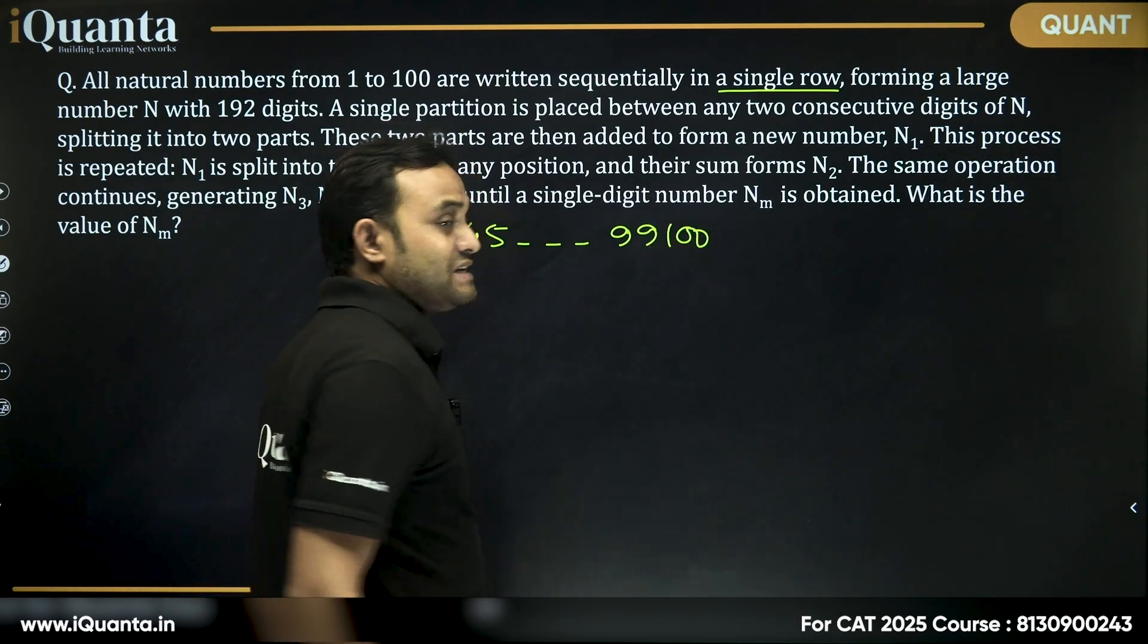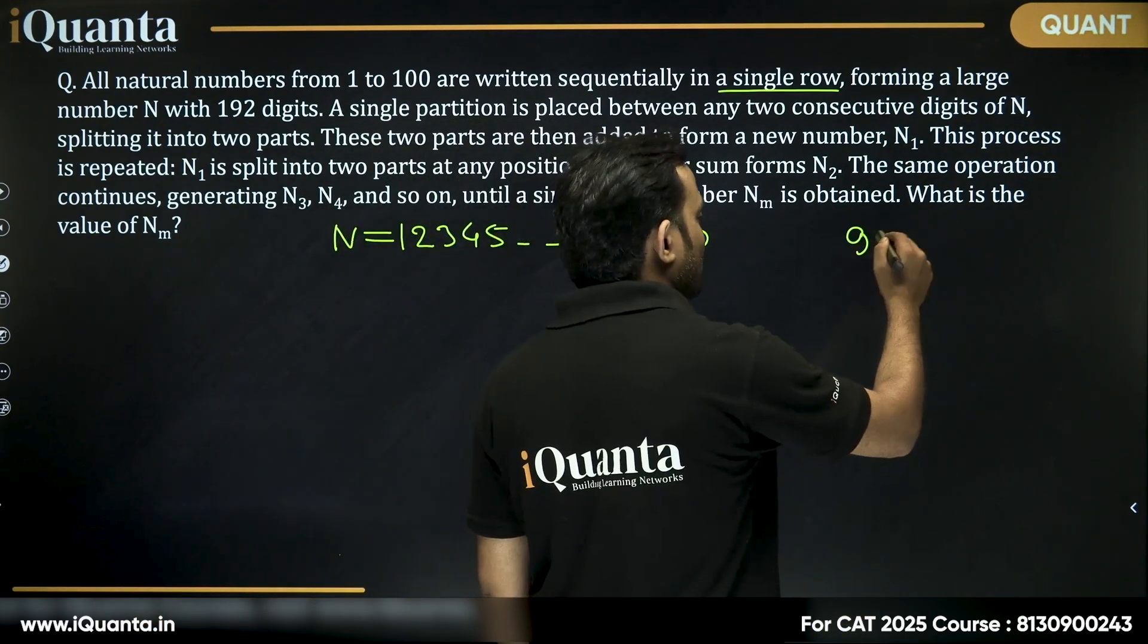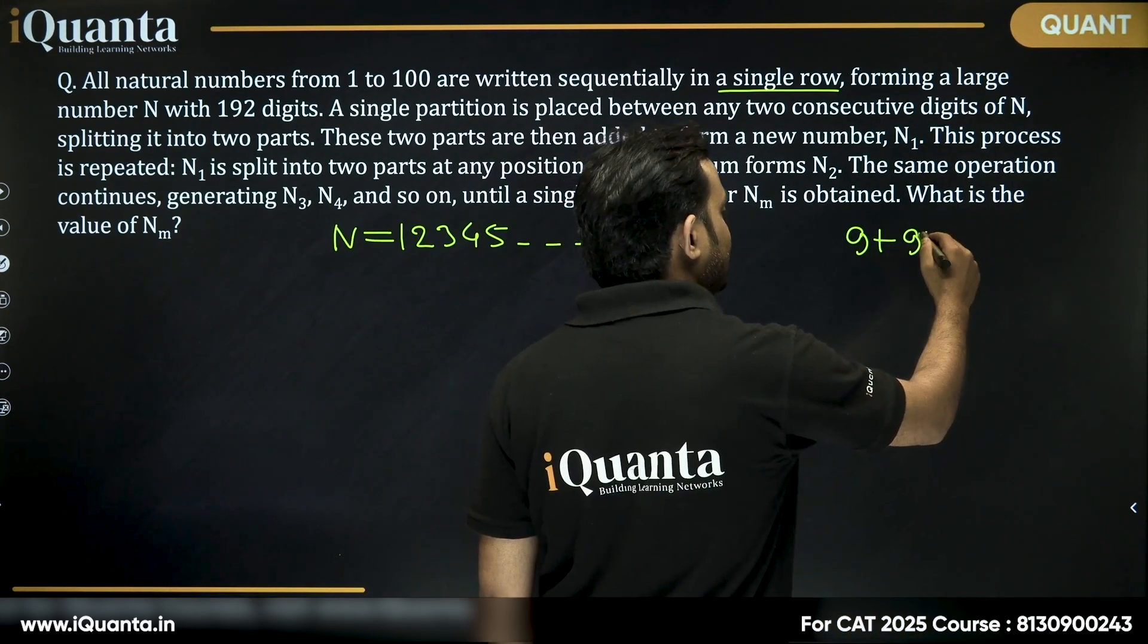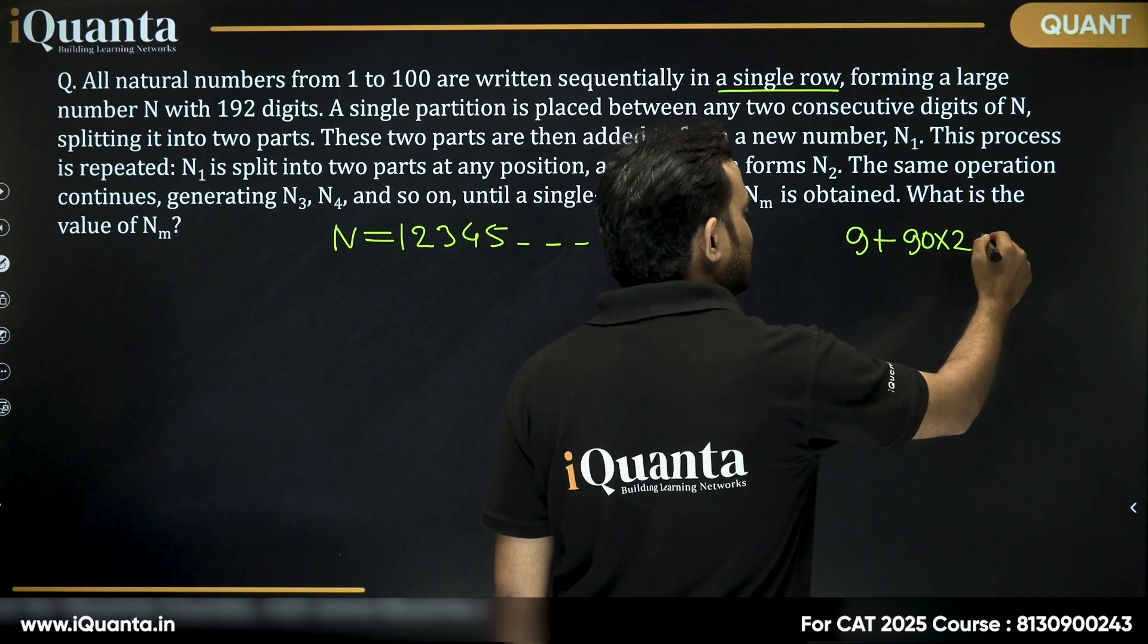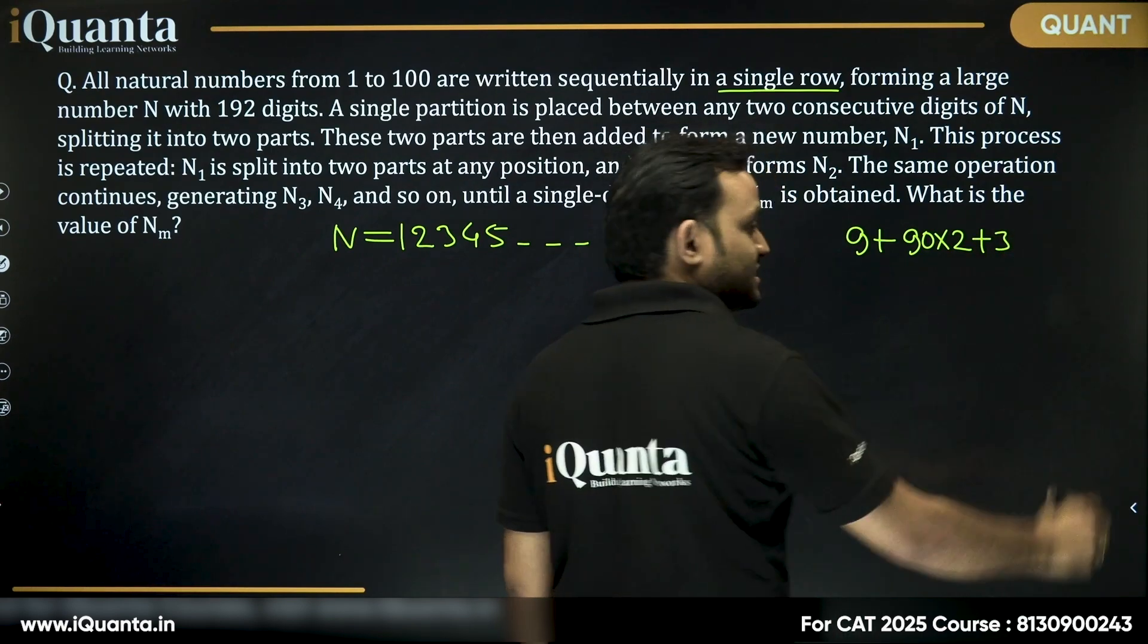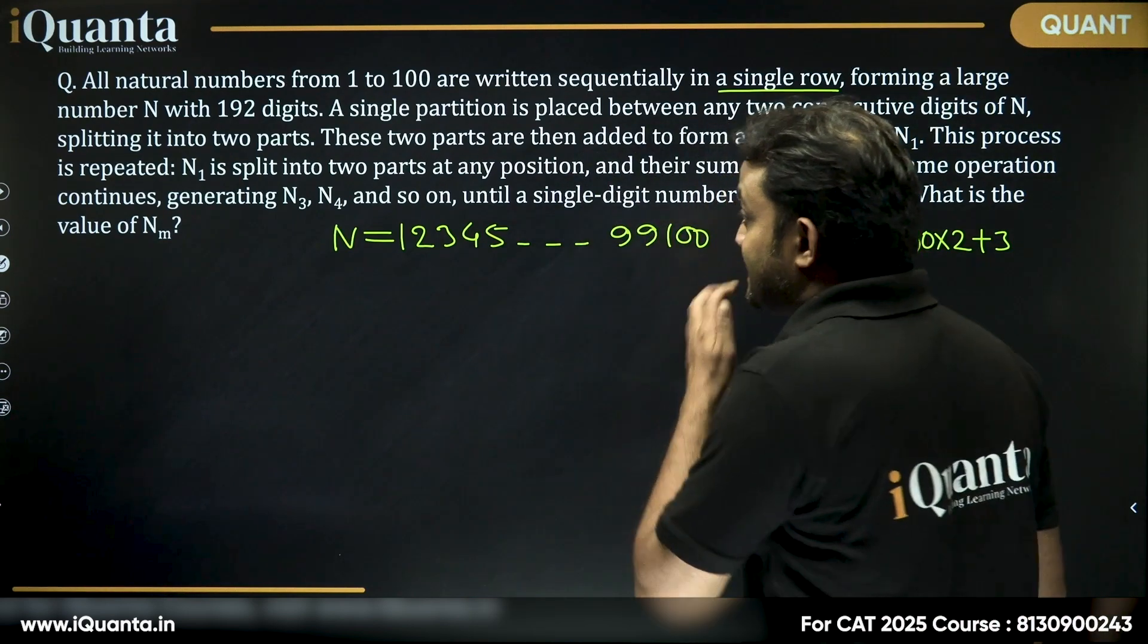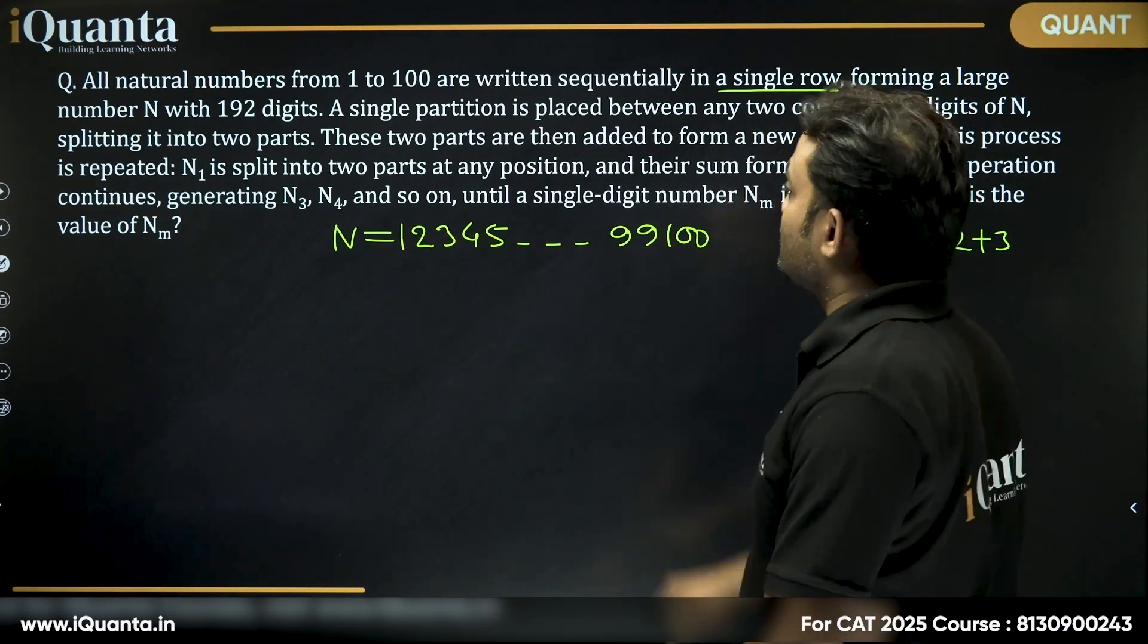Now, how many single digit numbers are there? 9 single digit numbers, 1 to 9. How many 2 digit numbers are there? 90 two-digit numbers, 10 to 99. And there is one 3 digit number. This gives us 192. That's why it says it's a 192 digit long number.